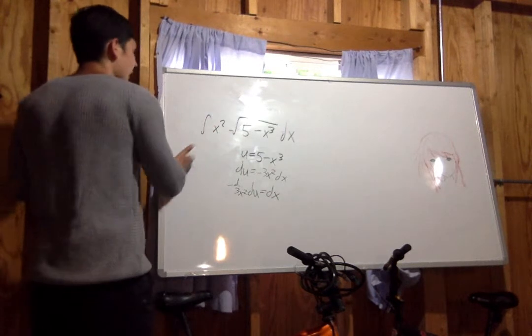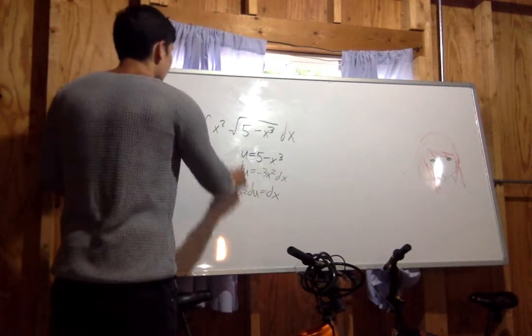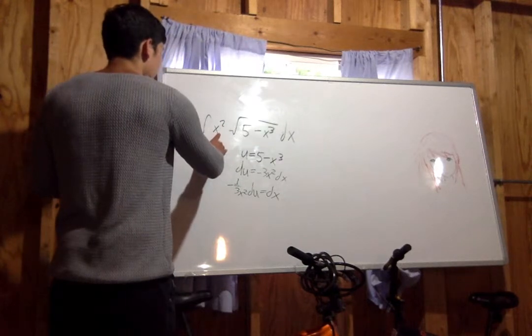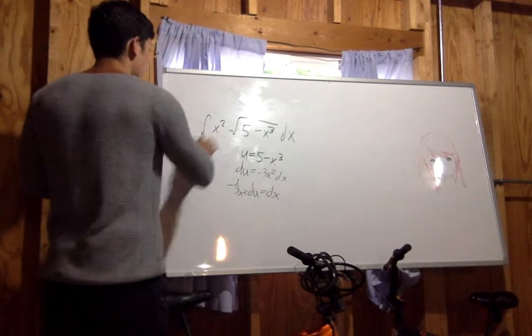The x squared disappears because one is in the denominator and the other is in the numerator. They cancel out.